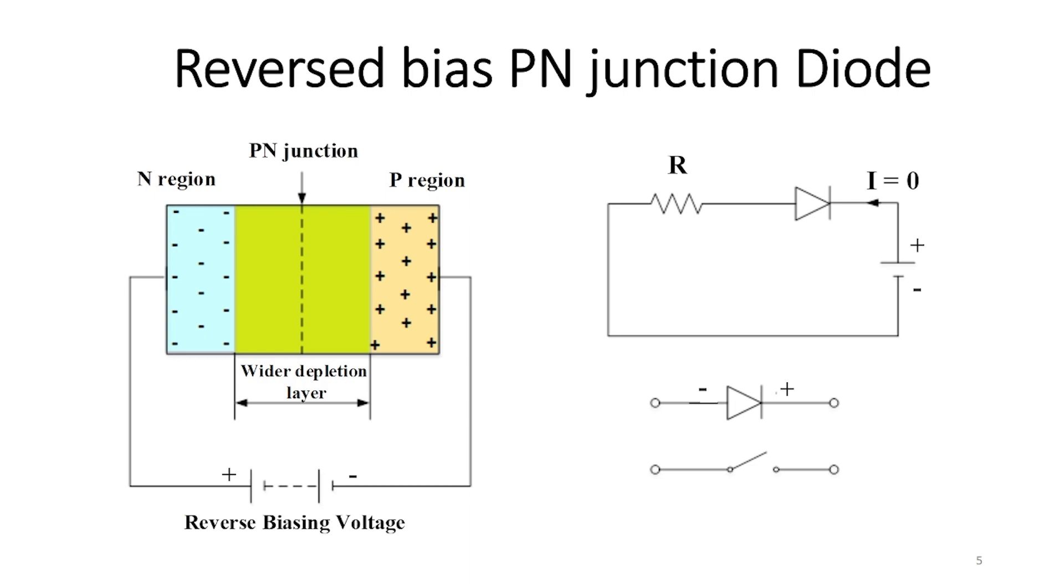If the plus side of the battery would be connected to the anode side of the diode, a current would flow through the circuit, but in reverse mode, it is blocked.